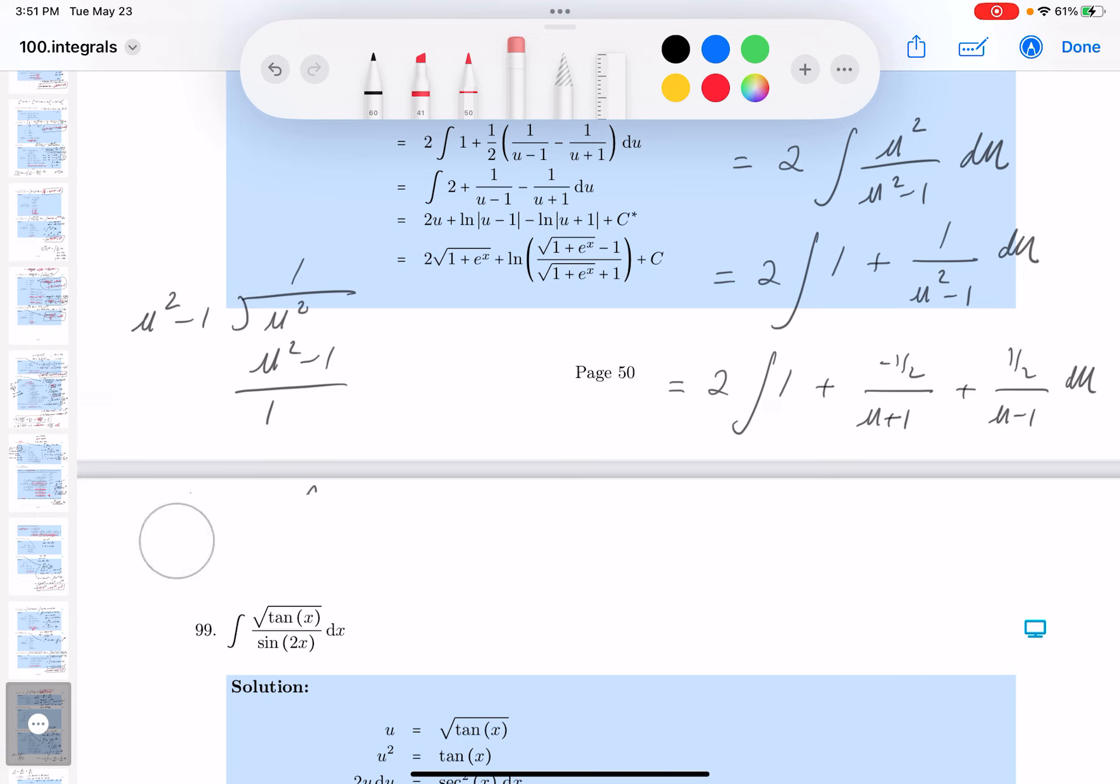Let me get my eraser out, get rid of this stuff over here. I don't need it anymore. I don't need my long division anymore. I do need to do this though. What do you get over here? You get 2, and then plus 1 over u minus 1 minus 1 over u plus 1, du.